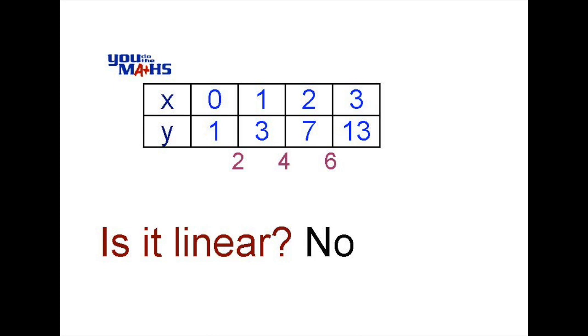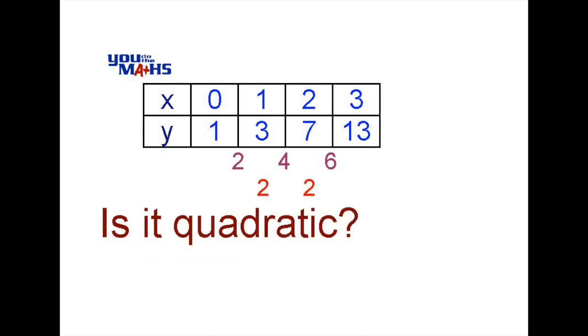Now let's have a look at the second difference which is basically the difference of the first differences. 4 minus 2 is 2, 6 minus 4 is 2, so that is consistent and we can say that it's a quadratic pattern. So a constant second difference gives us a quadratic pattern.